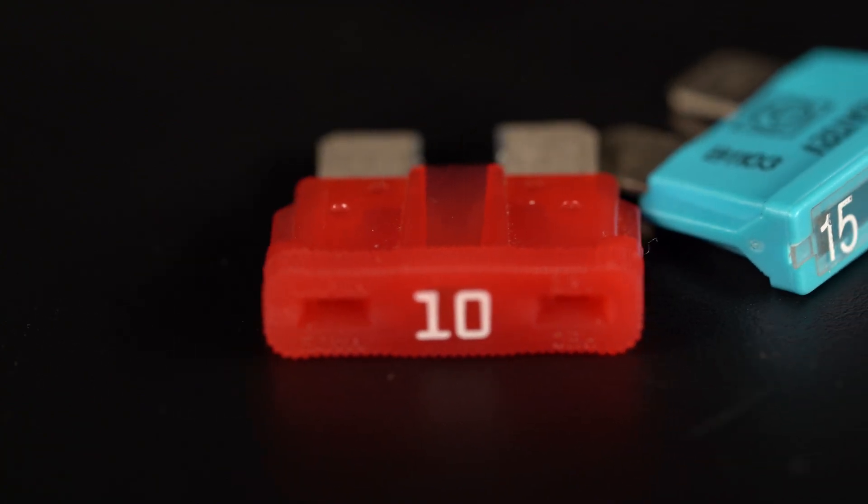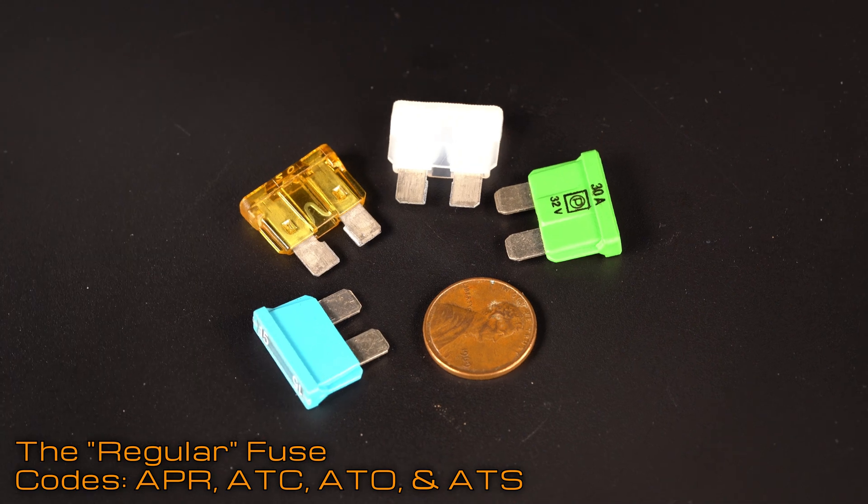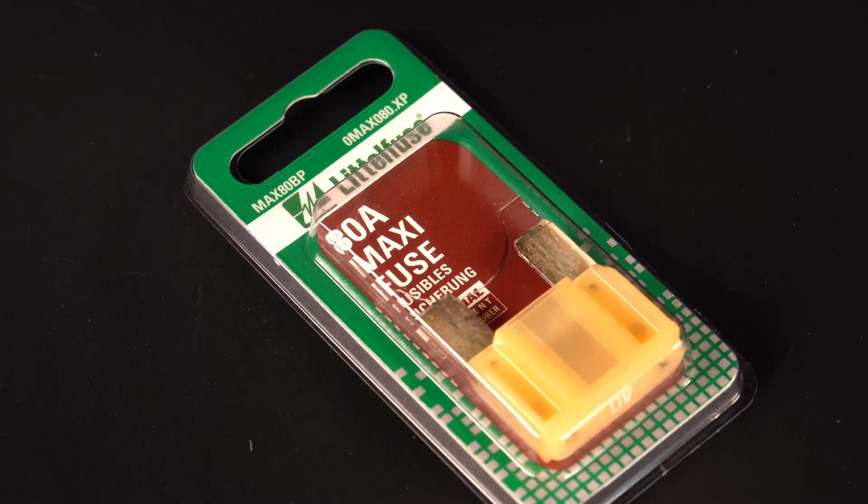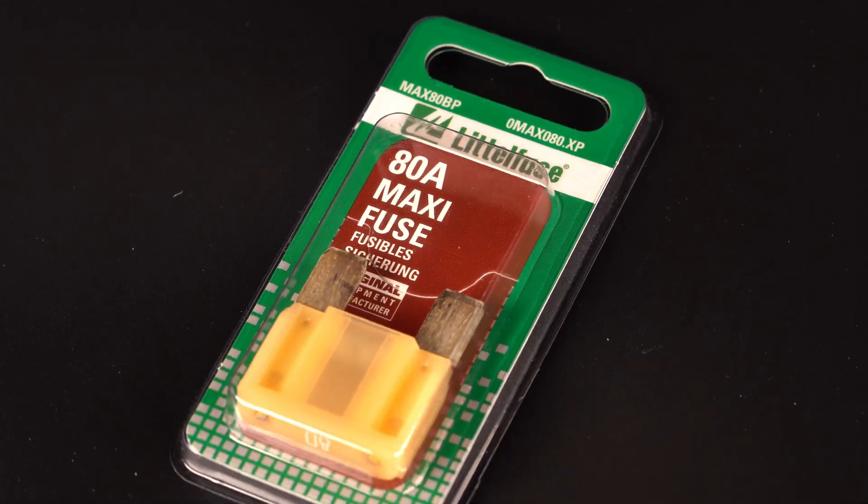For example, most 10-amp blade fuses are red, and most 15-amp blade fuses are blue. Regular blade fuses will typically be found in a range from 1-amp to 40-amps, while the larger maxi fuse variety typically ranges from 15-amps all the way up to 120-amps.